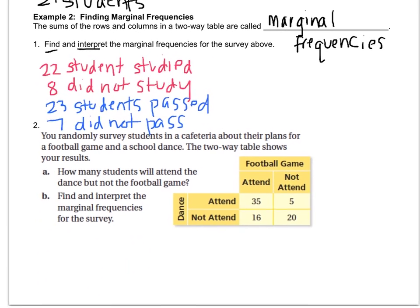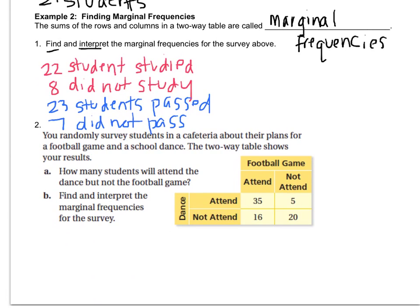New table. You randomly survey students in a cafeteria about their plans for a football game and a school dance. How many students will attend the dance but not attend the football game? We're looking for the intersection of going to the dance but not going to the football game. So the answer to A is five students.